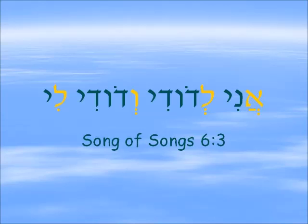Another connection that the rabbis make between Elul and the beloved bride who is the virgin is from a passage in Song of Songs — a phrase I'm sure you're familiar with. And you can see the first letters of that phrase, Aleph, Lamed, Vav, Lamed, spell out the name of the month Elul.